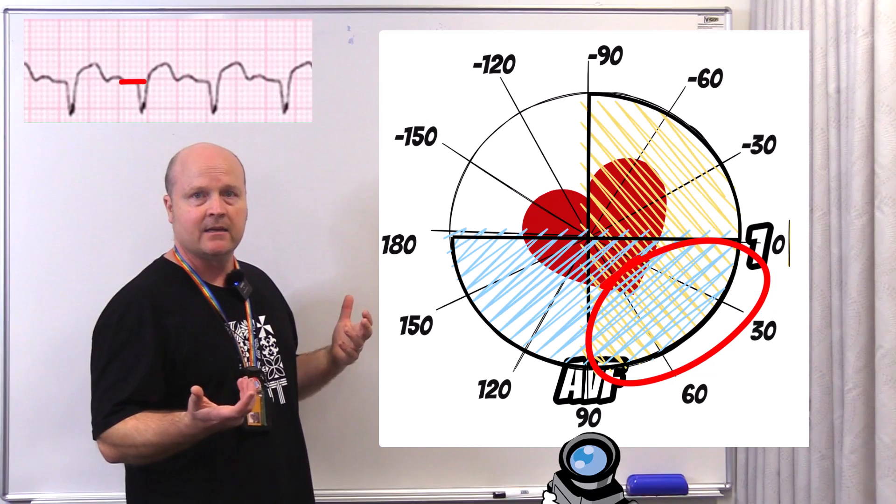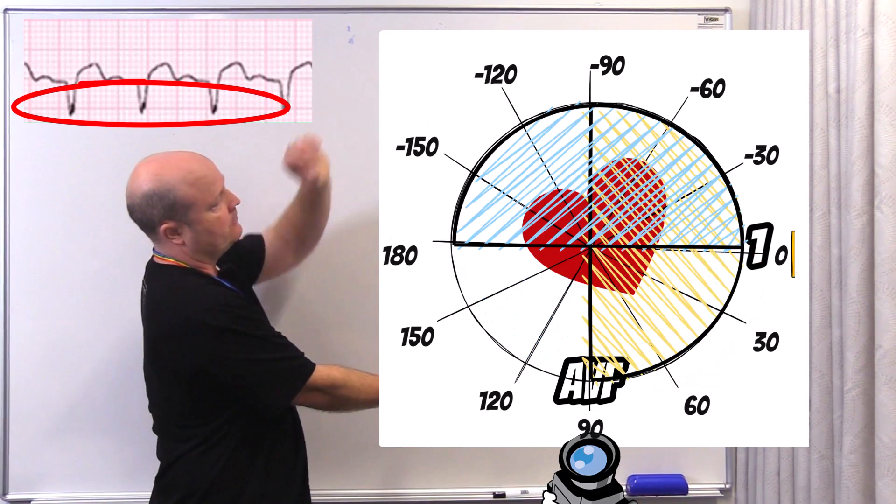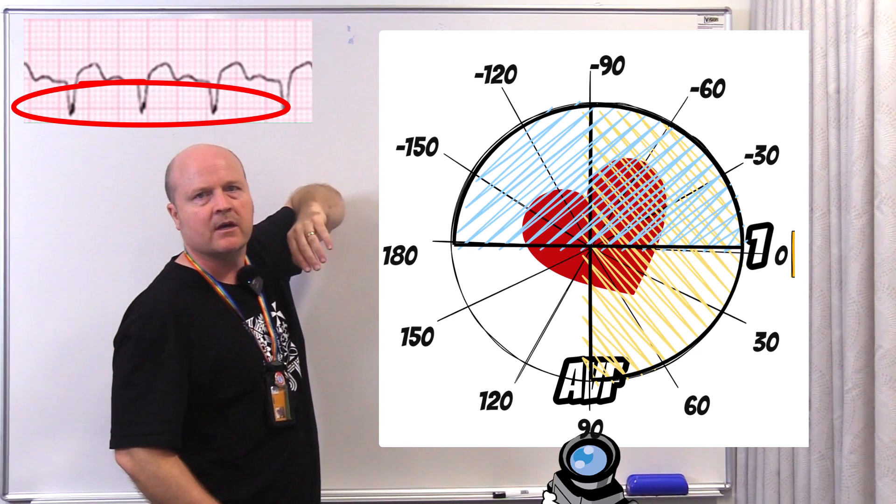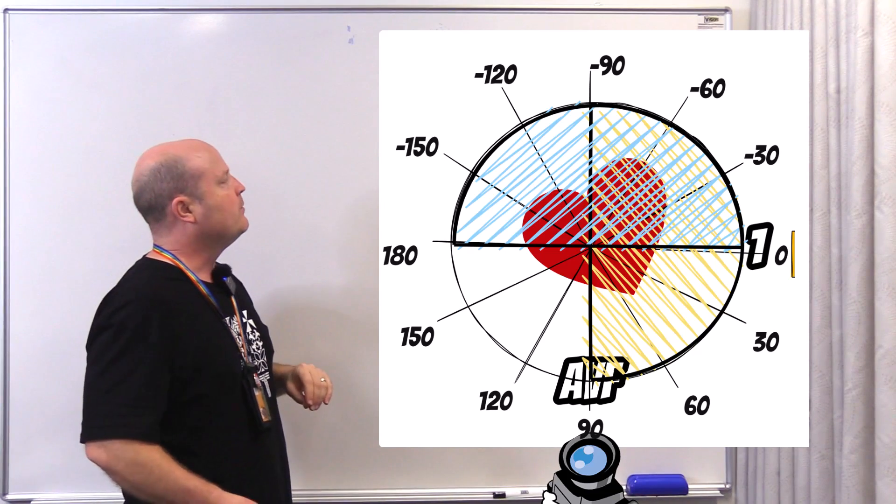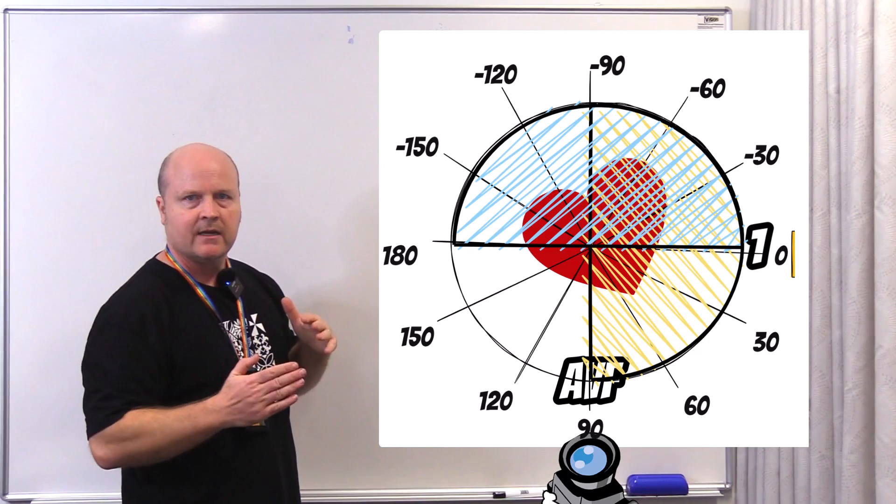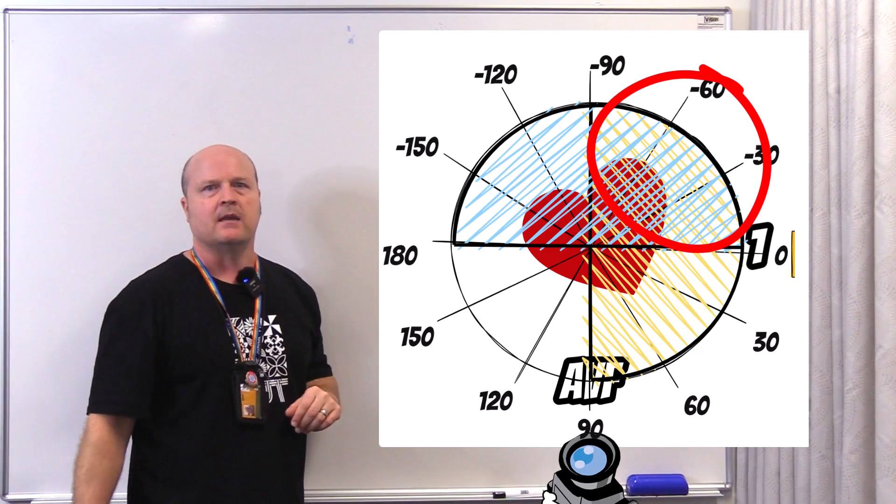If it's mostly negative, we know the direction of travel is mostly away from lead AVF, so we can shade in the top of our diagram. Now, when we've looked at one and AVF, we look at the crossover and overlap, and that's going to give us where our axis is going to be.